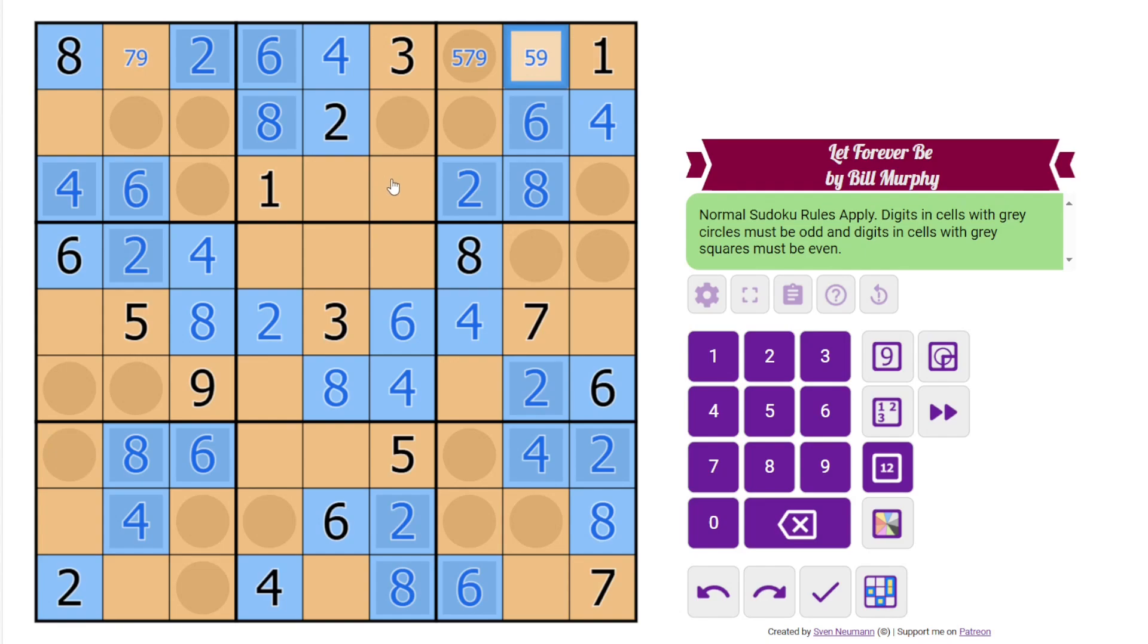I'm just going to start pencil marking some things until I see what it is I'm looking for. That's not 5. That's not 7. These are also 5, 7, 9. There's a 5 there. So this is 5. These are 1, 9. There's a 9 there.